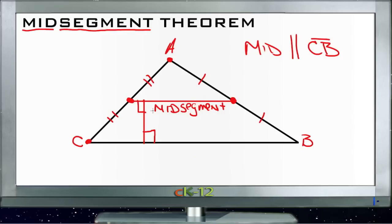It's going to be exactly half the length of the other side. So the length of the midsegment is going to be equal to one-half of the length of CB.